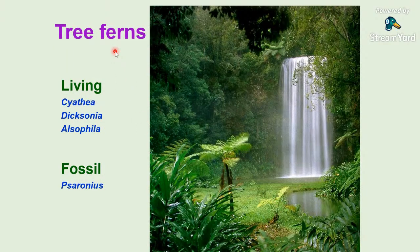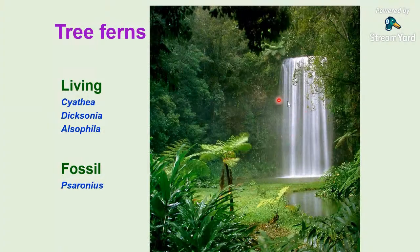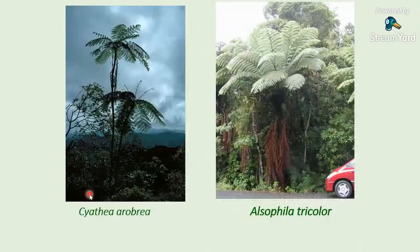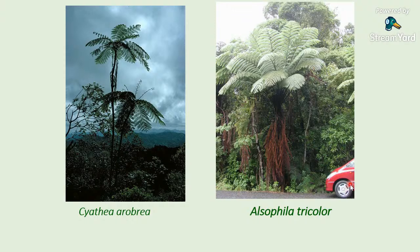We do have tree ferns among extant pteridophytes — three tree ferns: Cyathea, Dicksonia, and Alsophila. You can see Cyathea growing near a waterfall. Scoloecopteris is a famous fossil tree fern. The maximum height is attained by Dicksonia in Tasmania at 18.5 meters — you can compare the height with a car standing nearby. This is Alsophila, another tree fern.